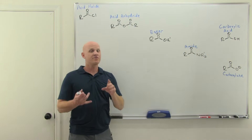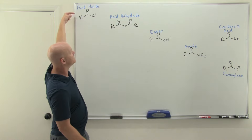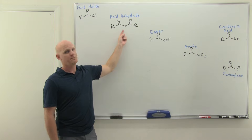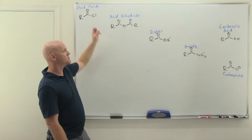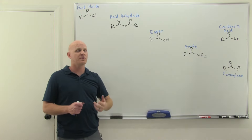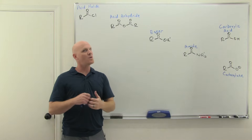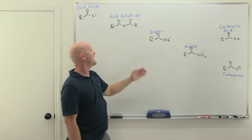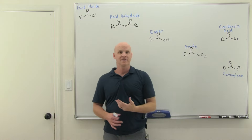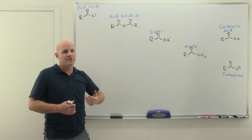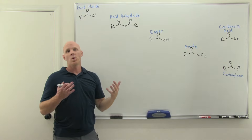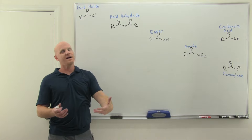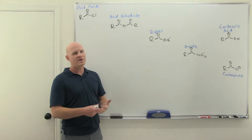The thermodynamics and kinetics are favorable if you're going downhill in energy on this chart, but not uphill. So we can turn an acid halide into an anhydride directly, but we can't turn an anhydride into an acid halide directly. You can convert any carboxylic acid derivative into any other, but the question is whether you can do it in one step or multiple steps. You can only do it in one step if you're going downhill.